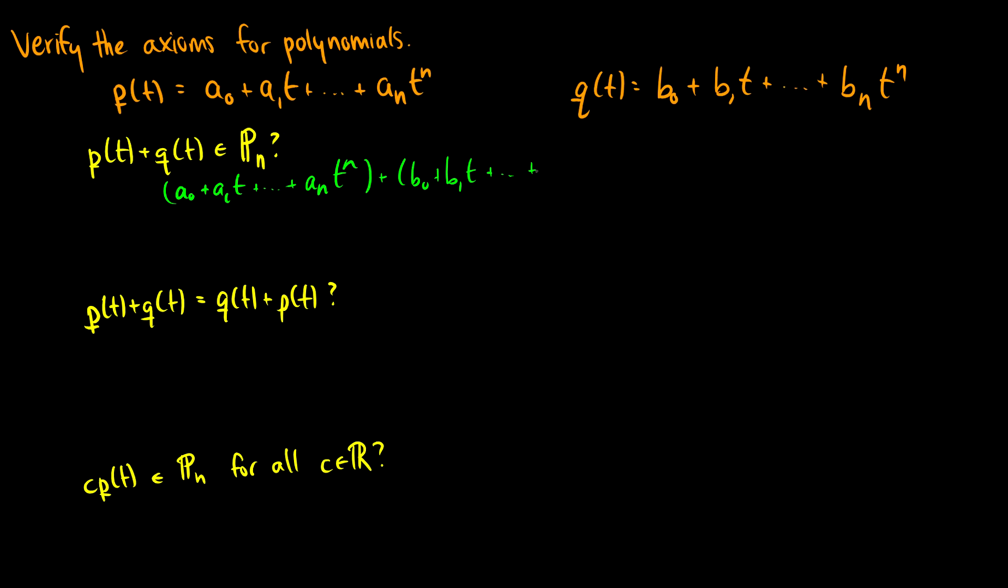all the way up to b_n t to the n, I should mention, these are the same degree, but they don't have to be because these are polynomials. So we could add a four degree polynomial with a seven degree polynomial,